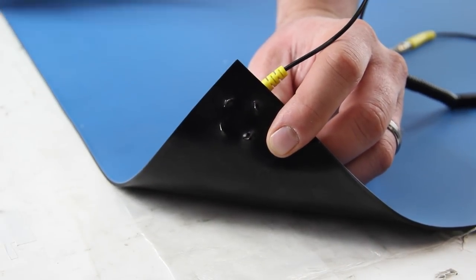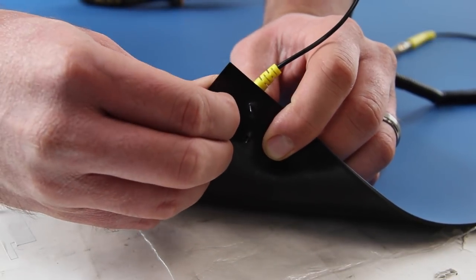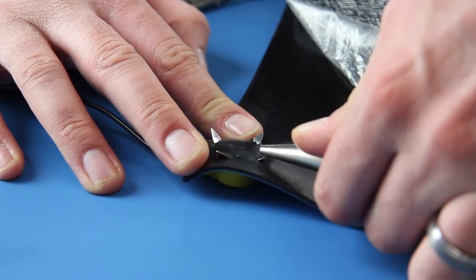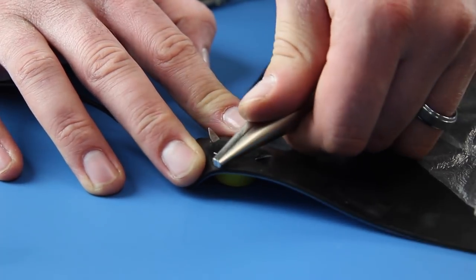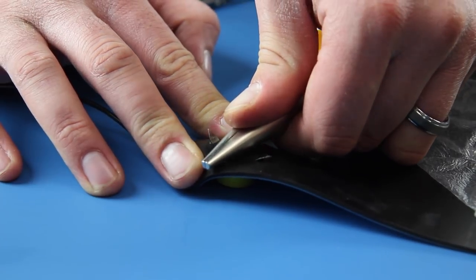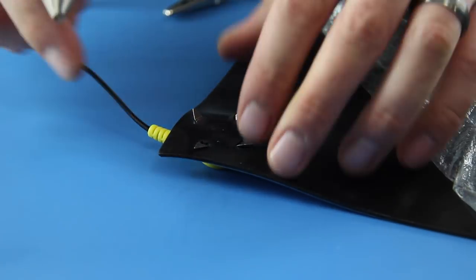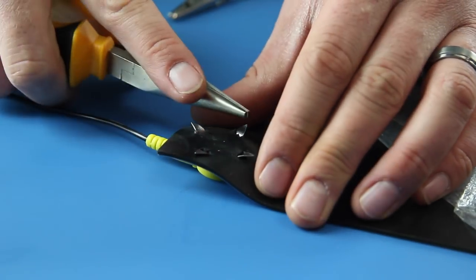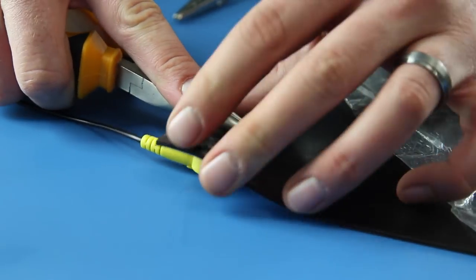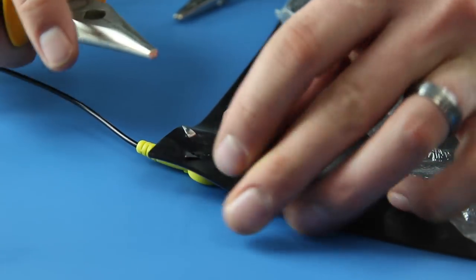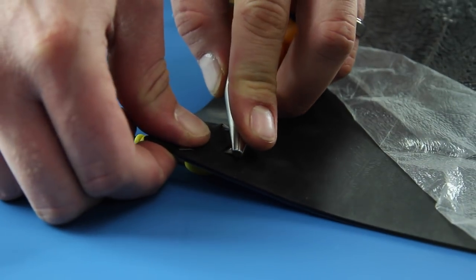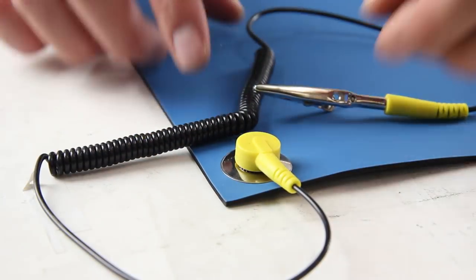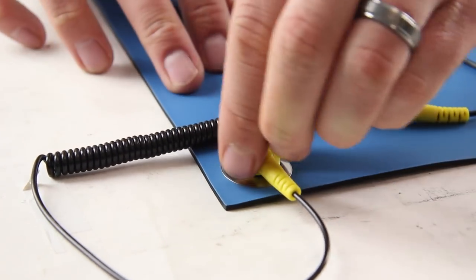Once all four points are protruding through the mat, flatten them out away from the center of the grommet. You can do so using pliers or the butt end of a screwdriver.